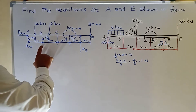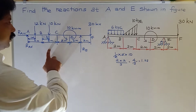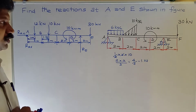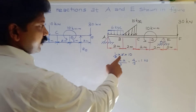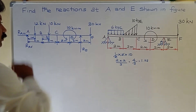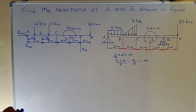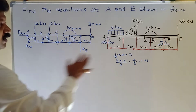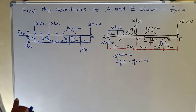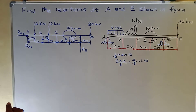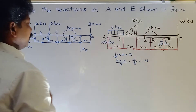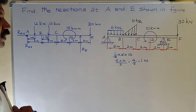The UVL load from point B: total load = half times distance times maximum load = half times 2 times 10 kN = 10 kN. The position is at 2 times distance divided by 3 = 4/3 = 1.33 meters from point B (least load end).